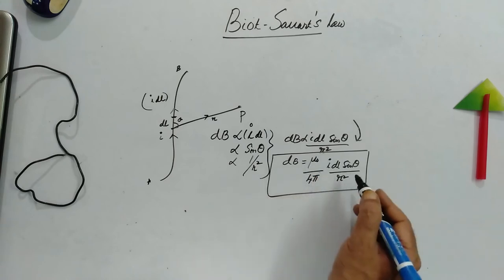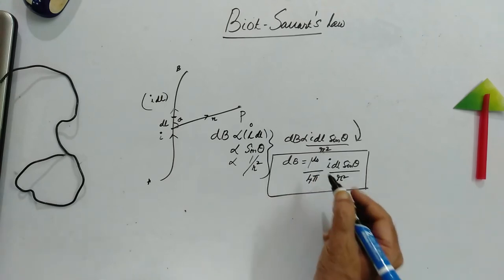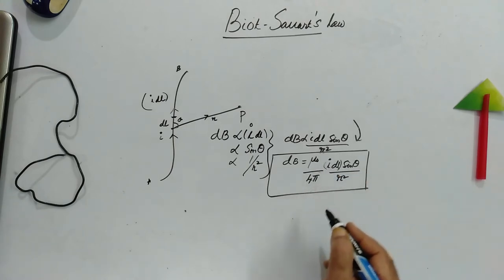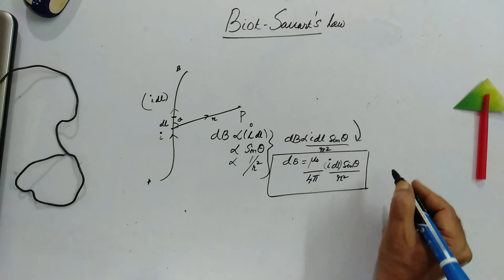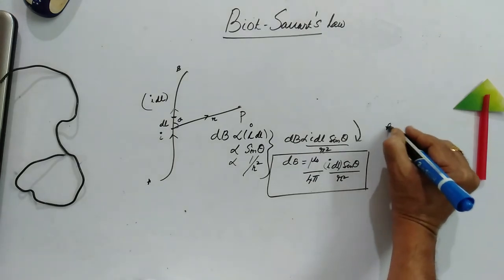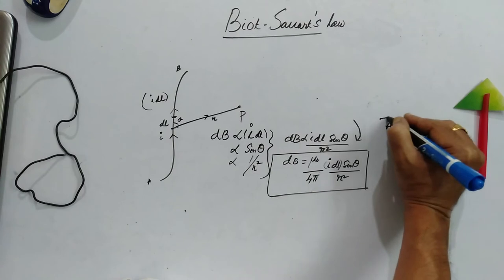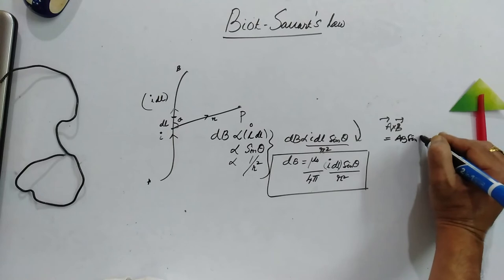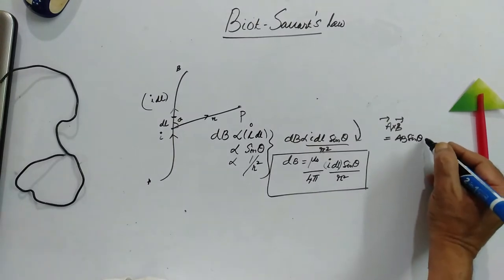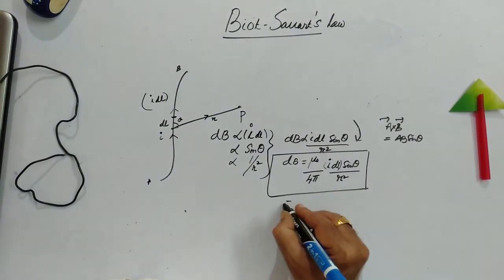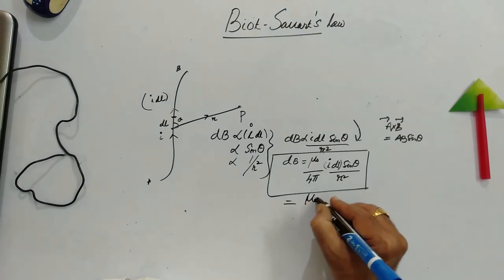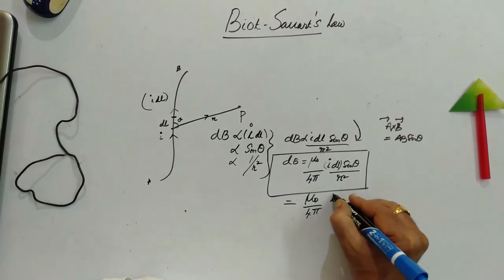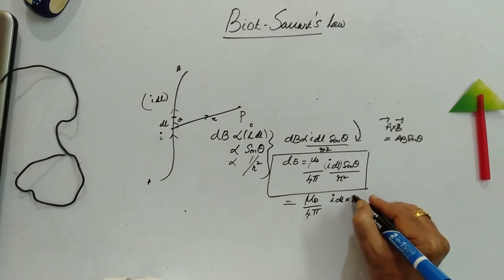Now this can be written in a vector form. How to write that? Because I dL is a vector and we know that A cross B is AB sin theta. This cross product is again a vector. So here with the help of unit vector,